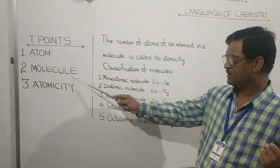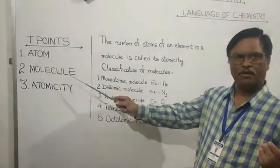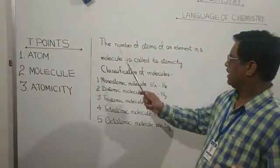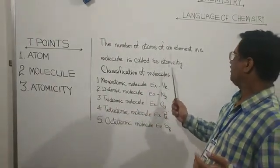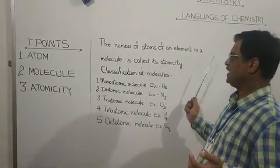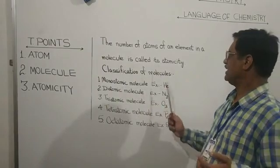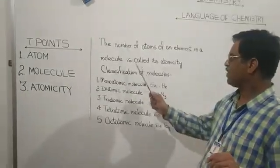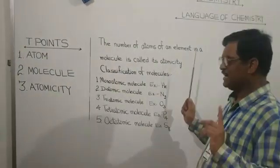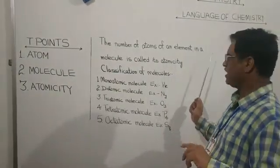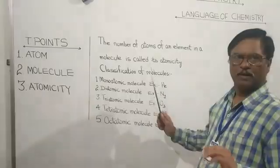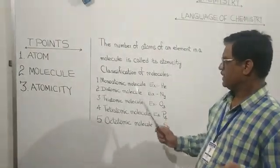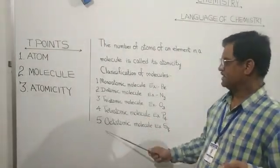We studied about atom and molecule. Now we are going to learn about atomicity. The number of atoms of an element present in a molecule is called its atomicity. We can classify molecules on the basis of atomicity under five categories.